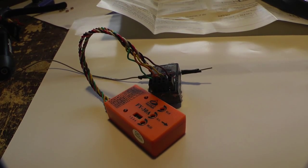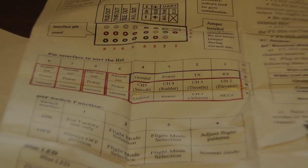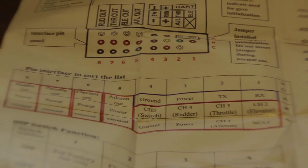So here is the FY30A connected to my receiver. On the instruction sheet right here, it tells you how to do that and which pins are supposed to connect to what, to plug it all in correctly.